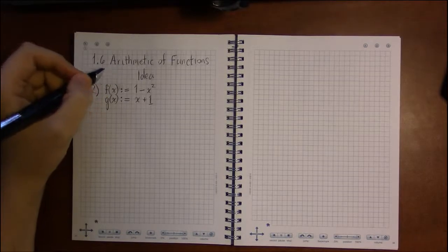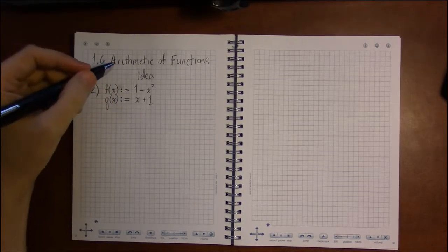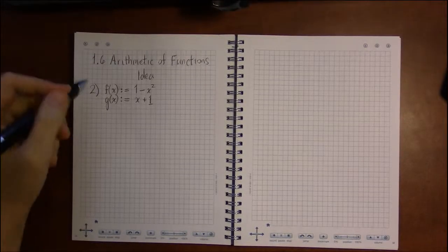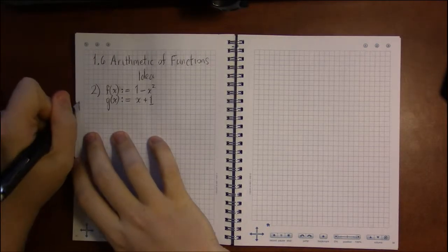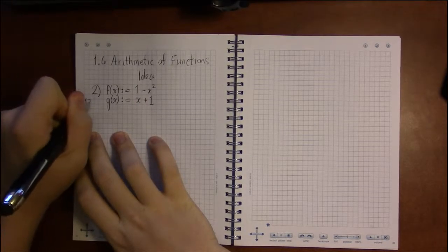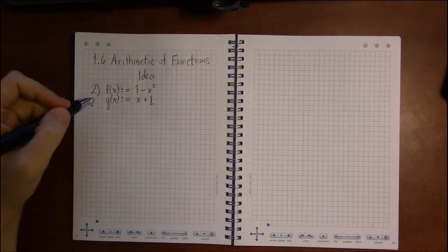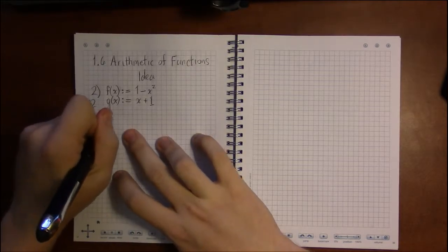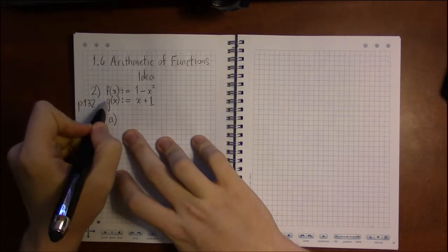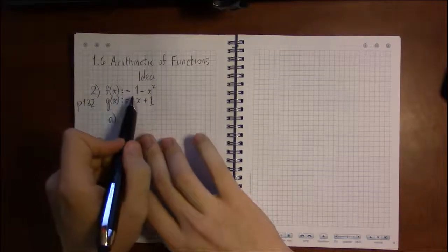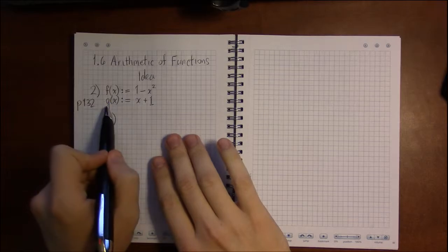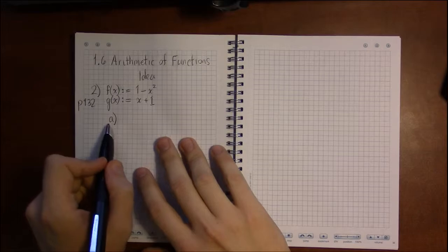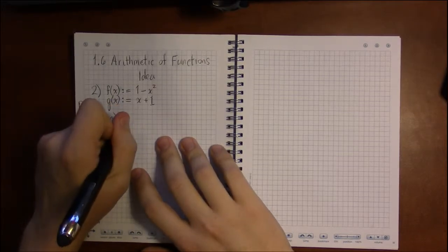Let's take a look at the basic ideas in doing arithmetic on functions. We're in section 1.6, looking at problem 2 on page 132. There are four parts to this problem. They give us f(x) defined to be 1 minus x squared and g(x) defined to be x plus 1.